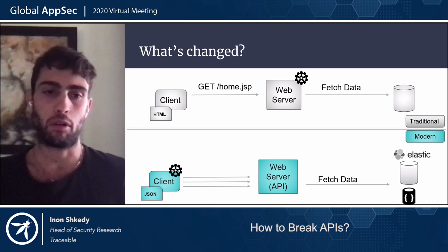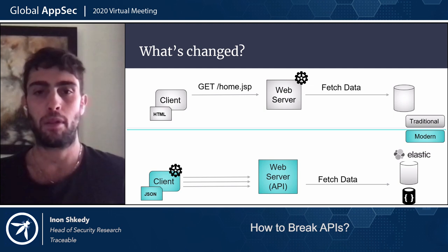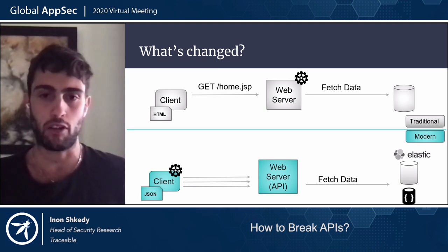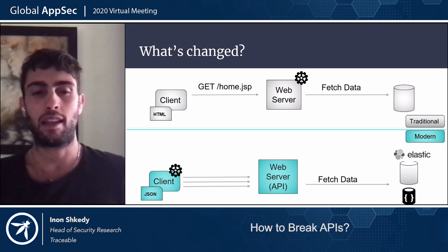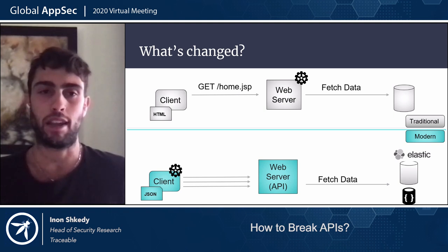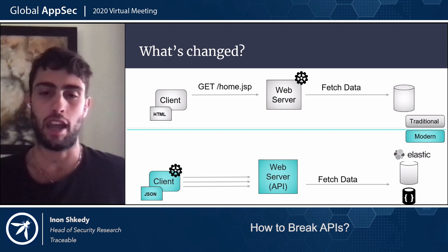Today, things look very different. Clients know much better what they want — they don't ask for a complete web page, they ask for specific pieces of information. For example, looking at the dashboard of some application, the client would send API calls to fetch the last 20 notifications or the top 10 users. Clients have much more context of what they need. Also, today clients maintain the user state. Back in the day, the backend knew exactly what state the user was in — what buttons were clicked — using view state, cookies, and other mechanisms. Today in modern applications, the client maintains this state and the web server has less context of what is happening on the client side.